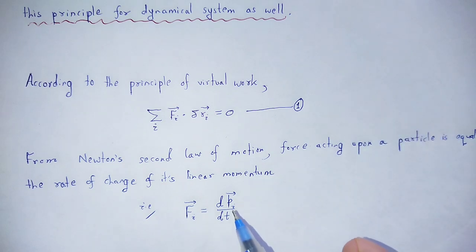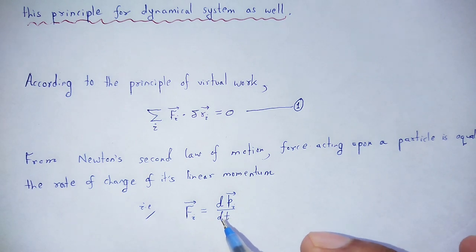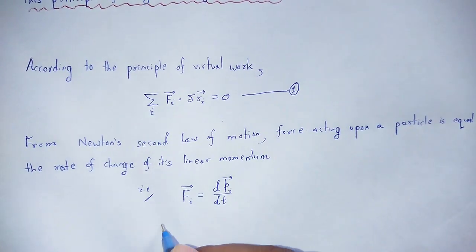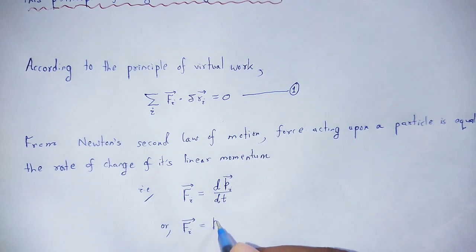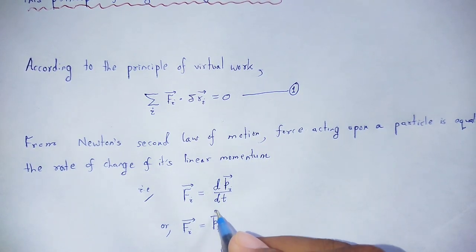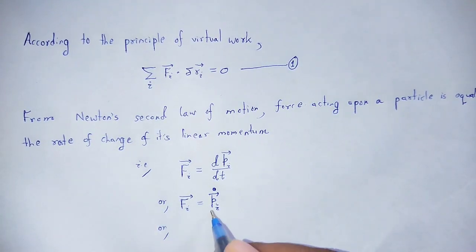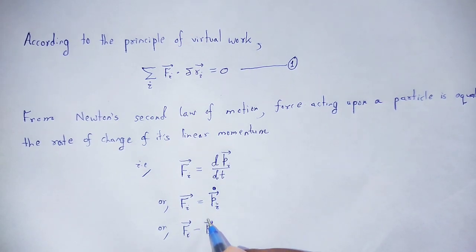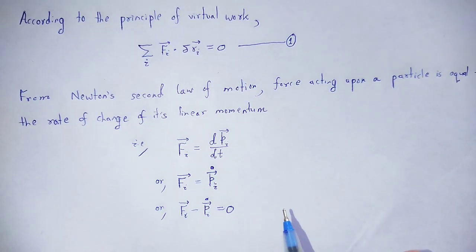In classical mechanics, the time derivative of pᵢ is equal to ṗᵢ — the first order differentiation. Rearranging, we get fᵢ vector minus ṗᵢ is equal to zero. This is the principle for the dynamic system.